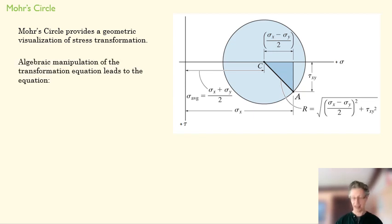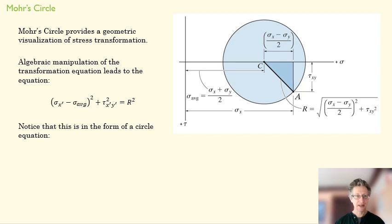We get there by taking our transformation equations from a couple of lectures ago and manipulating them until we get this. What's important to us is that this equation is in the form of a circle.